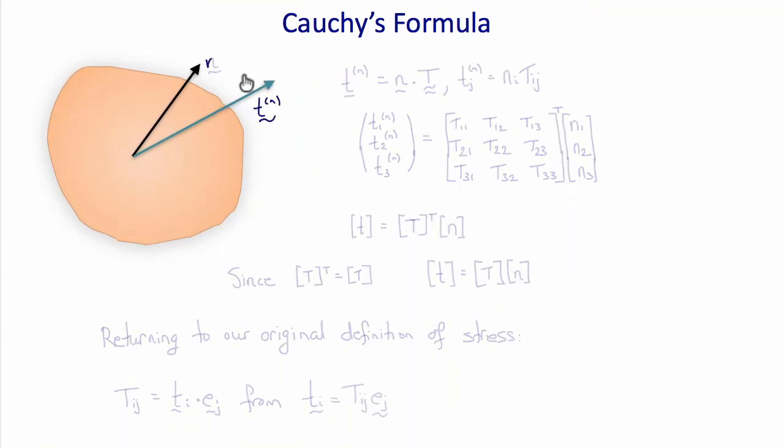So in summary, Cauchy's formula defines the stress in terms of the traction acting on the surface with unit normal n, such that t superscript n equals n dot T. Or the j-th component of t equals the i-th component of n times the i-j component of the stress tensor. This is called Cauchy's formula, and the stress defined this way is called the Cauchy stress tensor.